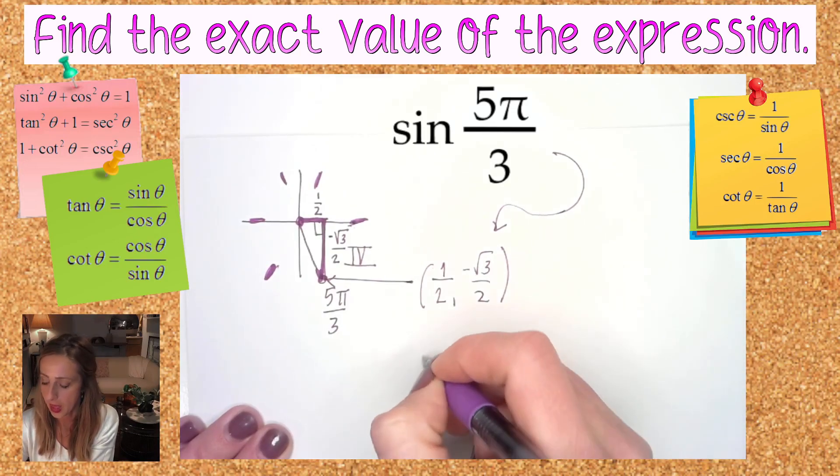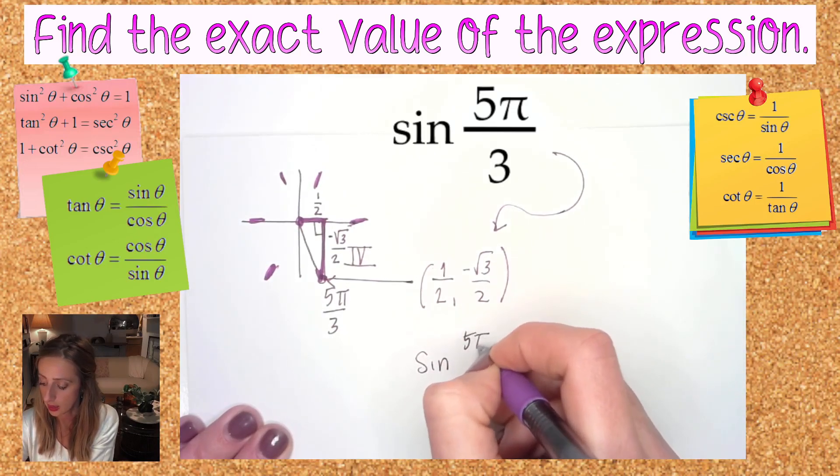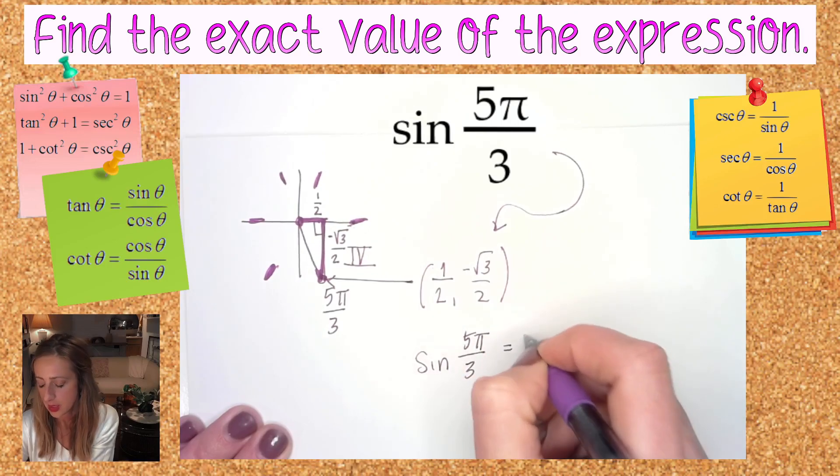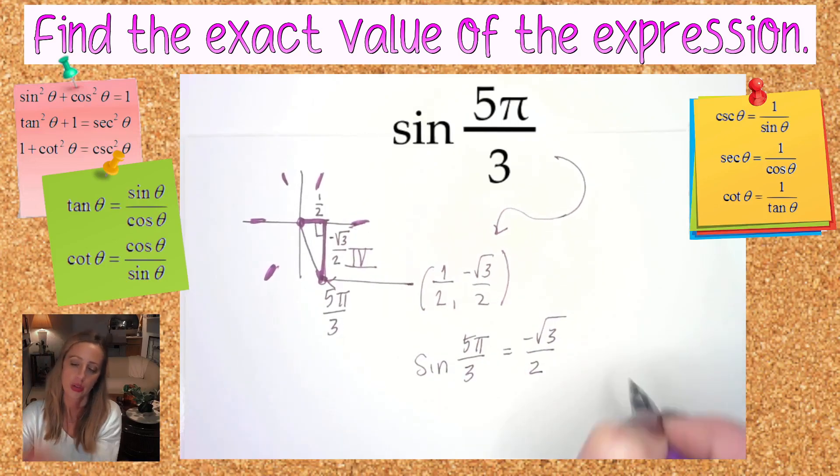That means that in conclusion, the sine of 5π over 3 is negative √3 over 2.